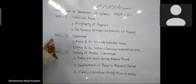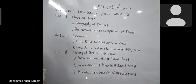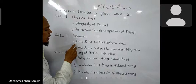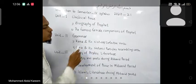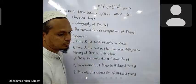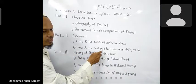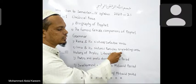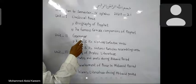Unit 2 belongs to the grammar section. In this section you have 2 lessons. Lesson number 1 is Kana and his sisters, also known as defective verbs. The second lesson is Inna and its sisters, also known as particles resembling verbs. We have to study these 2 lessons in this section.